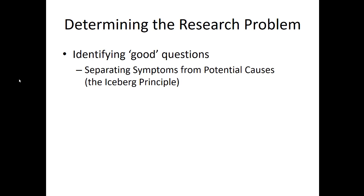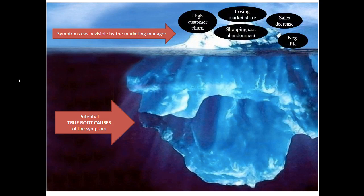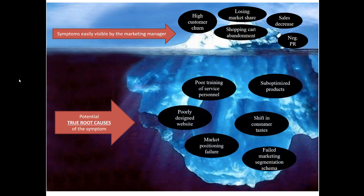We're going to start with something called the iceberg principle. You might know that often the visible portion of an iceberg is only the tip — it reflects only a tiny portion of what's underneath the water. In our scenario, the symptoms that are easily visible to the manager — high customer churn rate, losing market share, sales decrease, negative public relations, or shopping cart abandonment — are just the tip. The true root causes are the underlying issues below the waterline: poor training of service personnel, a suboptimized product mix, a poorly designed website, or incorrect market positioning. These are the things that actually cause the symptoms and are usually more worthy of investigation.